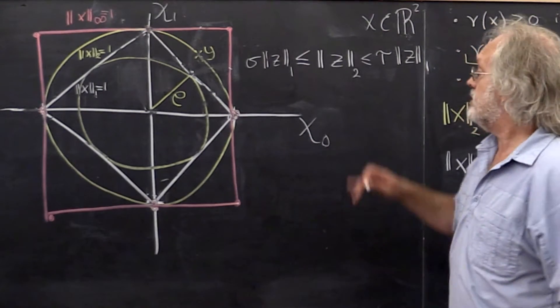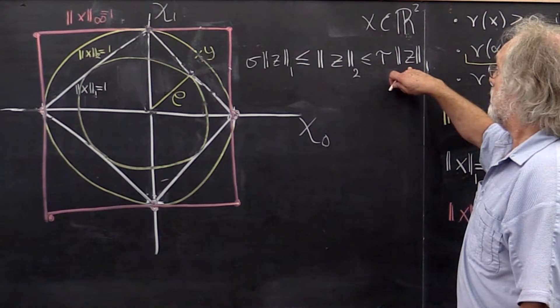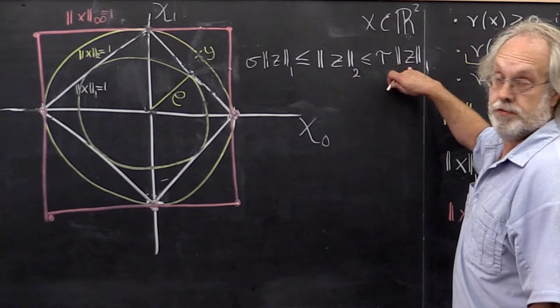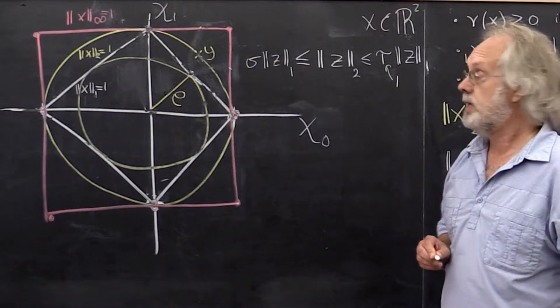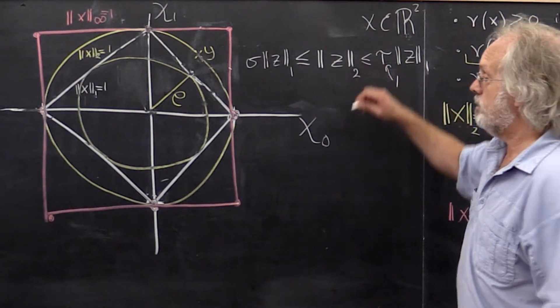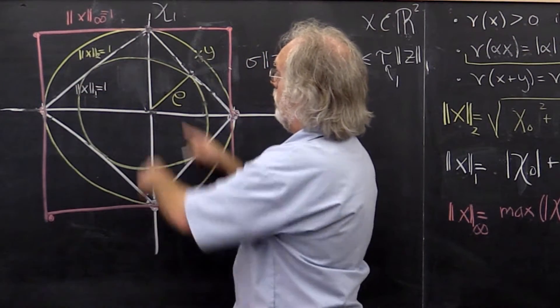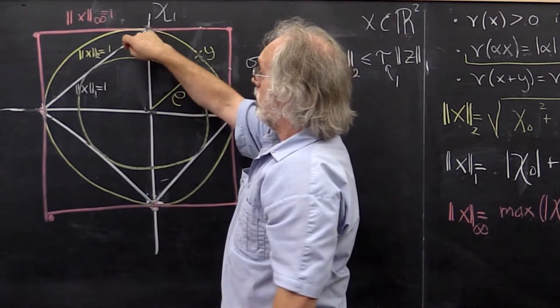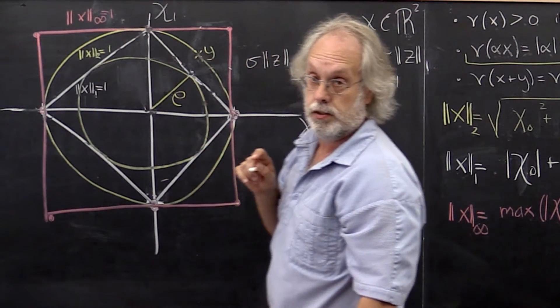What we just learned is that the 2-norm of z is always bounded above by the 1-norm of z. So tau here is just the number 1. And we know that that's a tight bound because we can see that these unit balls touch. So there are points for which it's equal.